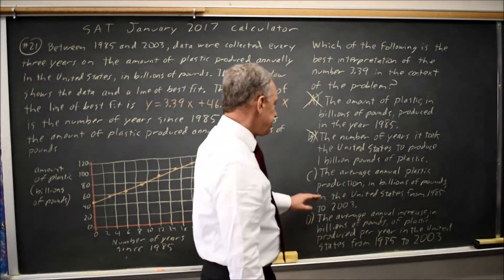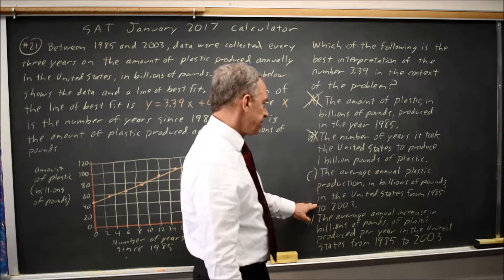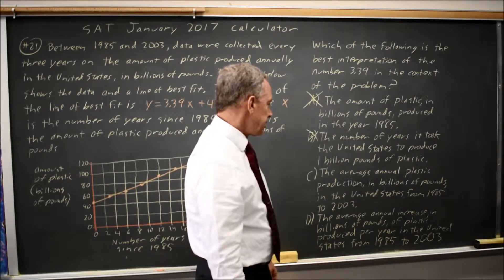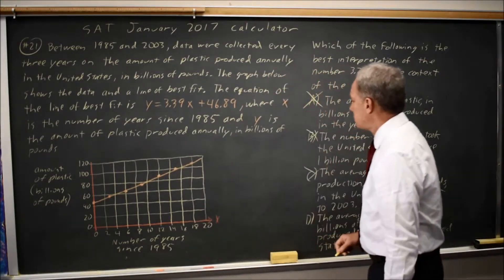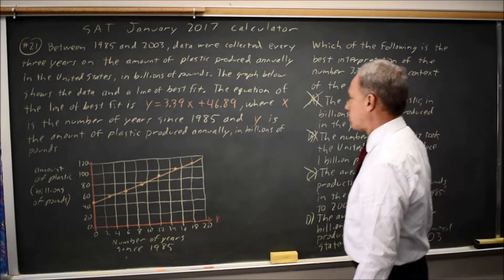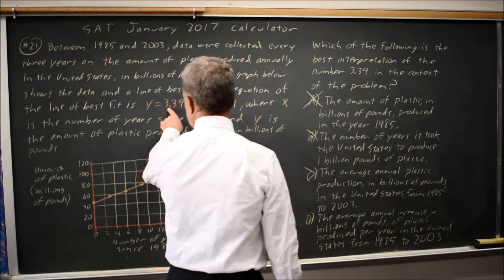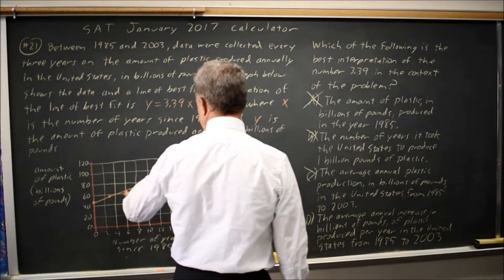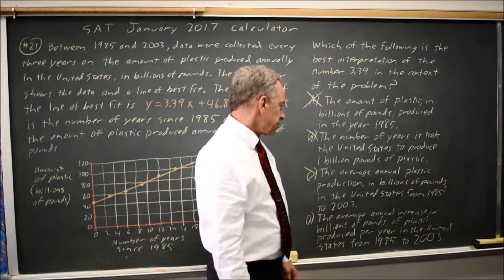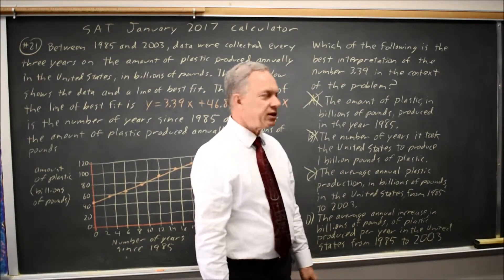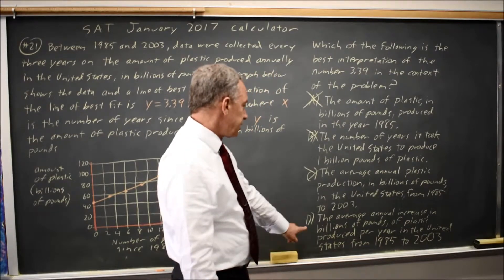Choice C, average annual plastic production in billions of pounds in the United States from 1985 to 2003. Again, our average is way over 3.39 billion. Our average looks somewhere around 80 billion pounds of plastic per year, so that would not be correct.